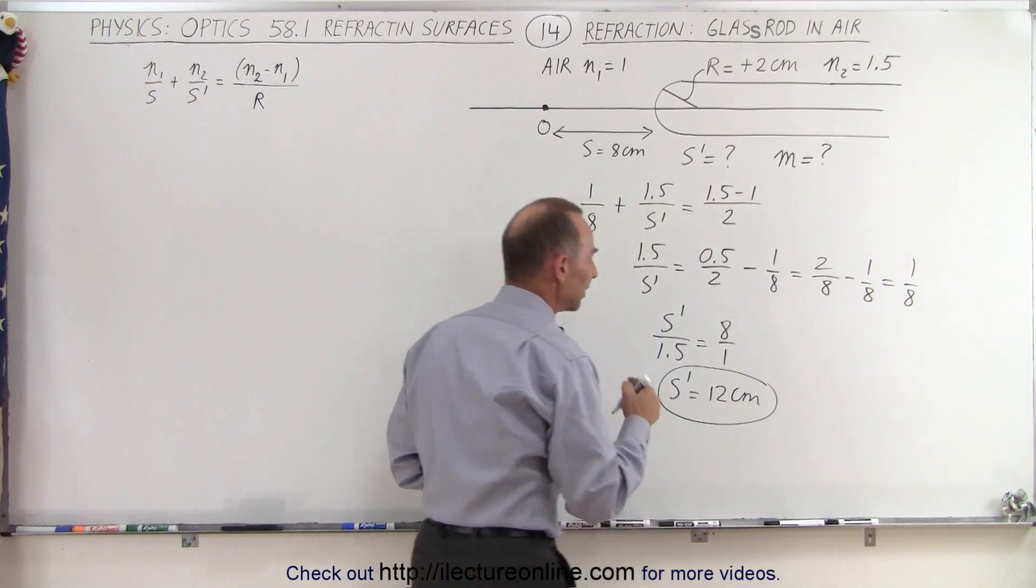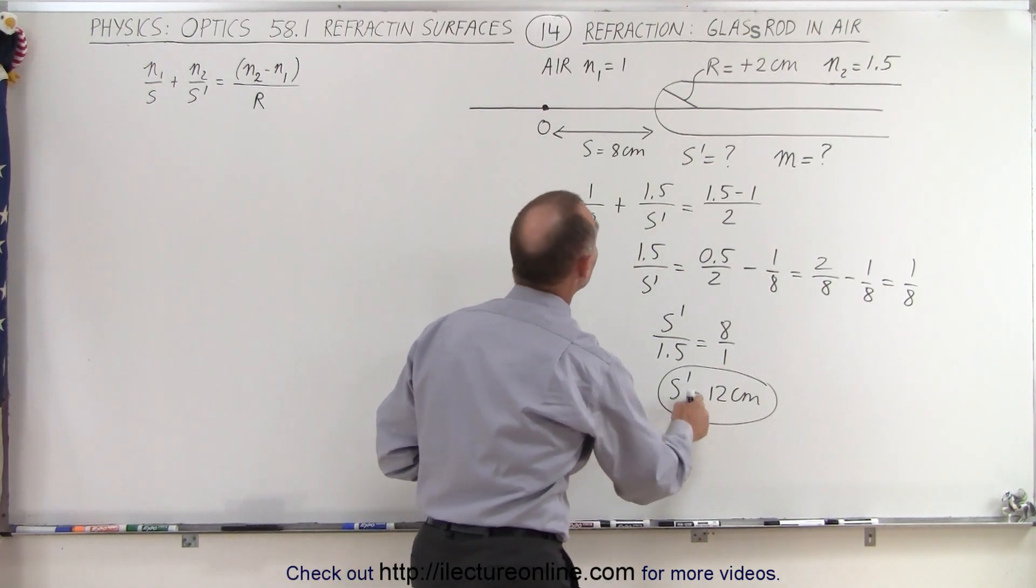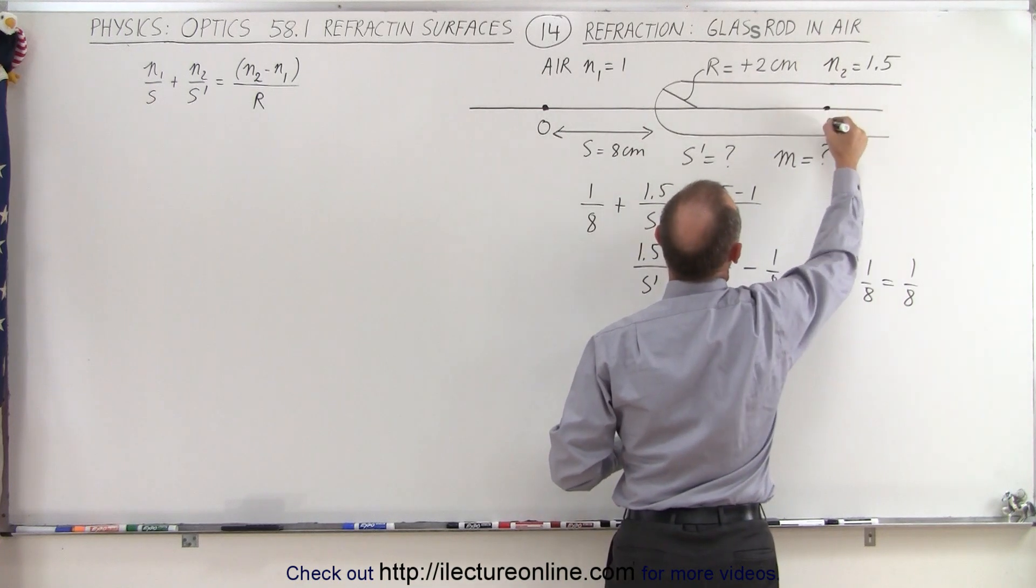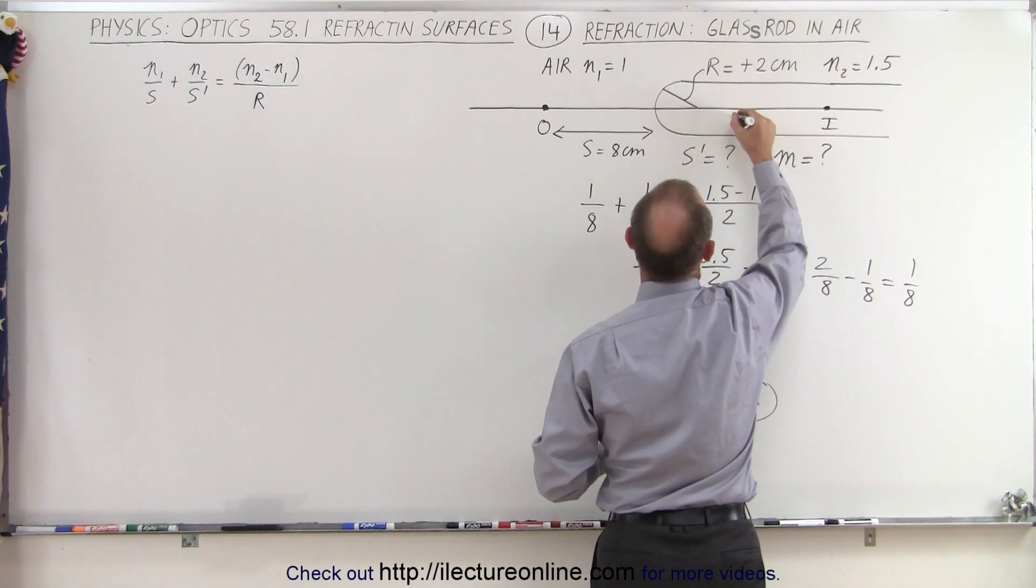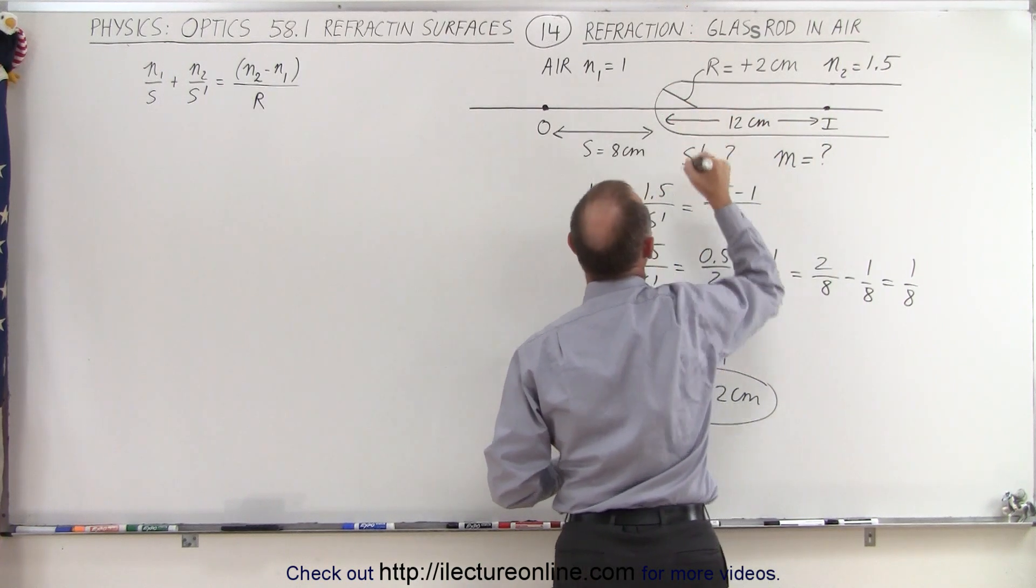So notice that we have an image on the other side of the boundary, because the s prime distance is positive. So over here somewhere, we're going to find the image at a distance of 12 centimeters behind the boundary, like that.